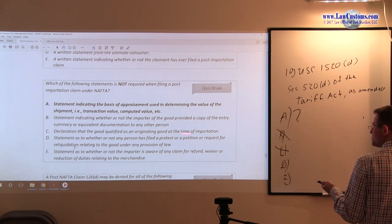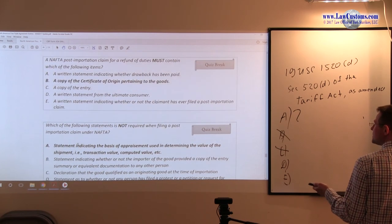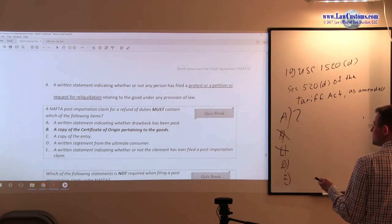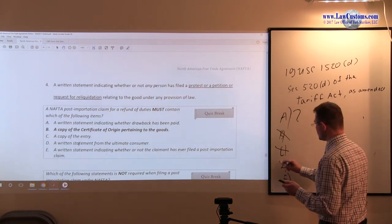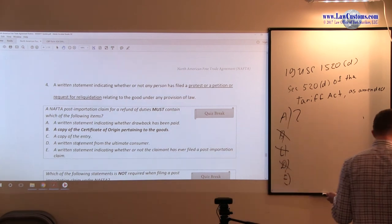So C is out. D protest or petition statement is contained over here. So D is out as well, because it's a requirement, and we are looking for the one that's not required.